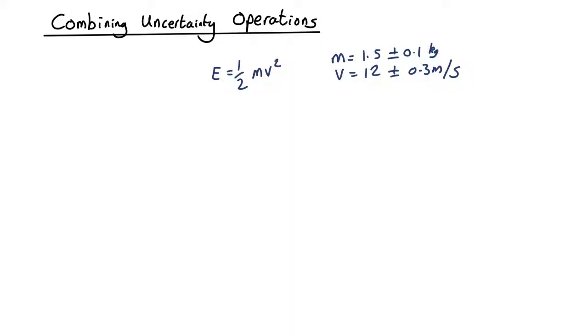And here's where it gets a bit complicated. What happens if you have to combine several different uncertainty operations? We've seen the laws for multiplying two things, adding two things, raising to a power. But what if you have to do several of those things at once?